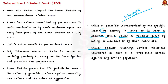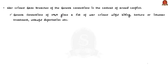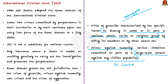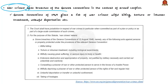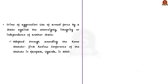Third, war crimes — grave breaches of the Geneva Conventions of 1949 in the context of armed conflict, including willful killing, torture or inhuman treatment, unlawful deportation, and taking hostages. Fourth, the crime of aggression — the use of armed force by a state against the sovereignty, integrity, and independence of another state. The definition of this crime was adopted by amending the Rome Statute in 2010 at the first review conference in Kampala, Uganda.